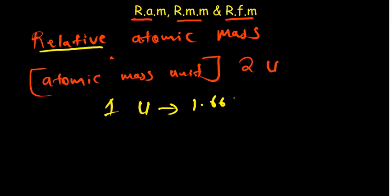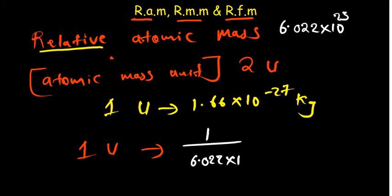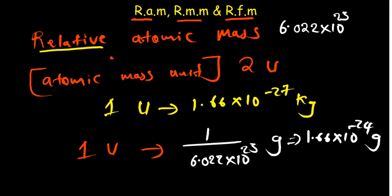One atomic mass unit is equivalent to 1.66 × 10⁻²⁷ kilograms. You can also think of it this way: 1 over Avogadro's constant (6.022 × 10²³) in grams equals 1 atomic mass unit. If you perform that calculation — dividing 1 by 6.022 × 10²³ — you get 1.66 × 10⁻²⁴ grams. To convert from grams to kilograms you divide by 1000, which means subtracting 3 from the exponent, giving 1.66 × 10⁻²⁷ kilograms.